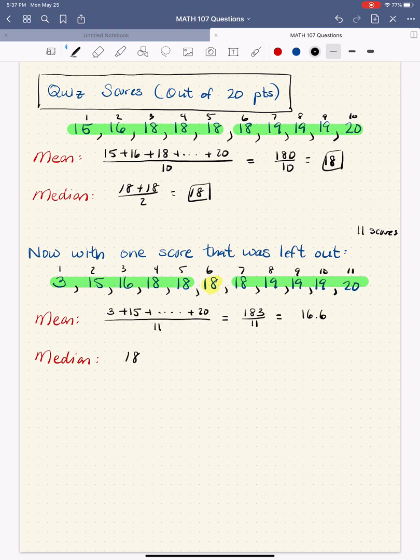The mean radically decreased, we'll call it decreased significantly, while the median remained the same.